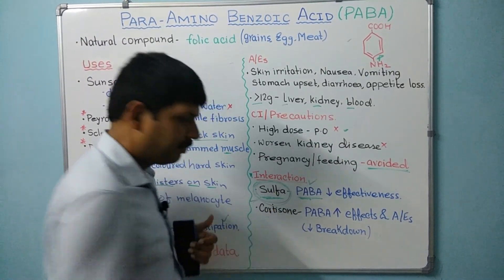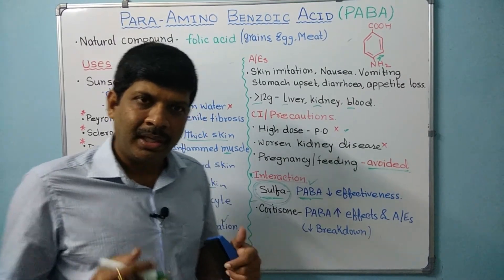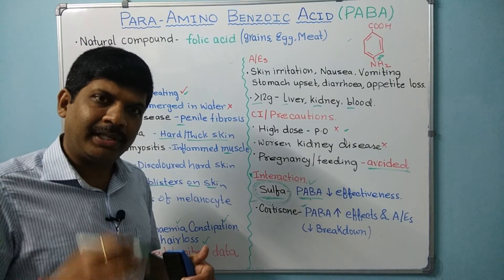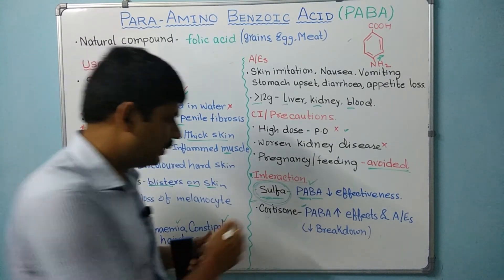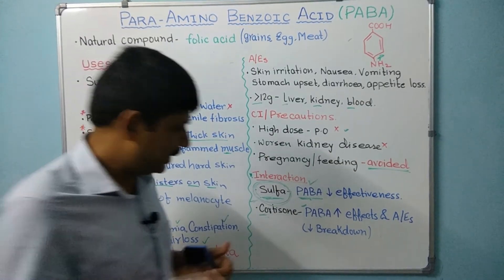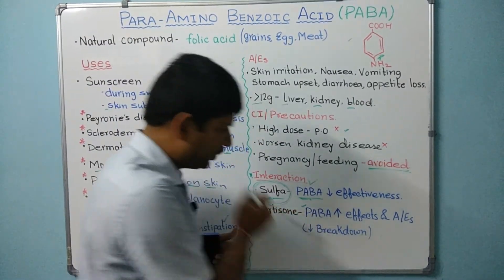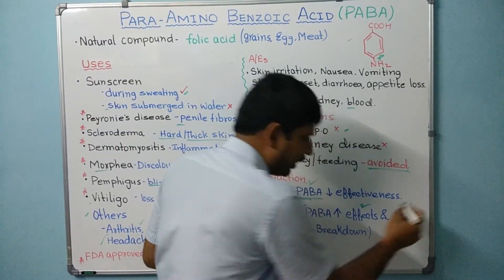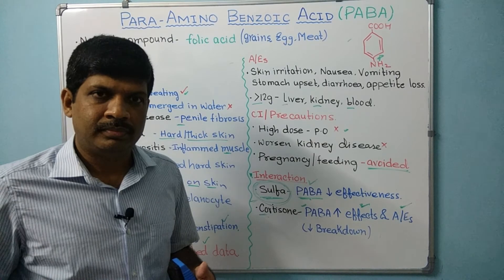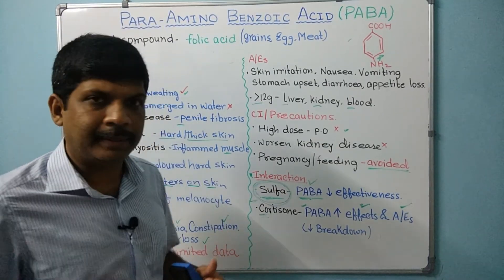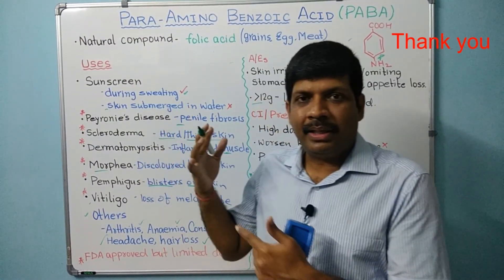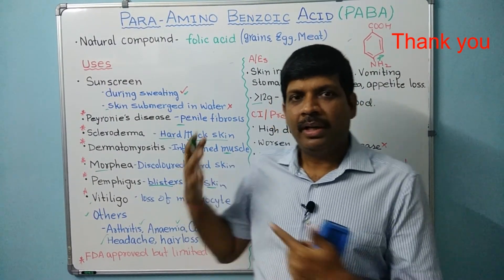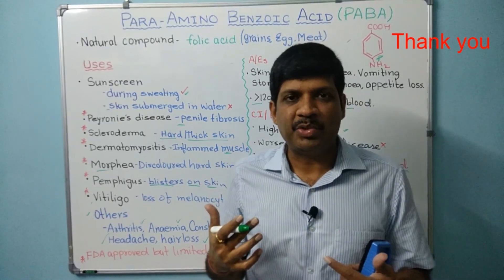The second interaction is with cortisone. Cortisone is normally degraded inside the body, but if PABA is given along with it, PABA reduces the breakdown and metabolism of cortisone, leading to increased concentration of cortisone in the body, which causes increased effect and adverse effects of cortisone. This was the interaction summary. Hope this was a useful explanation of para-aminobenzoic acid. Thank you so much.